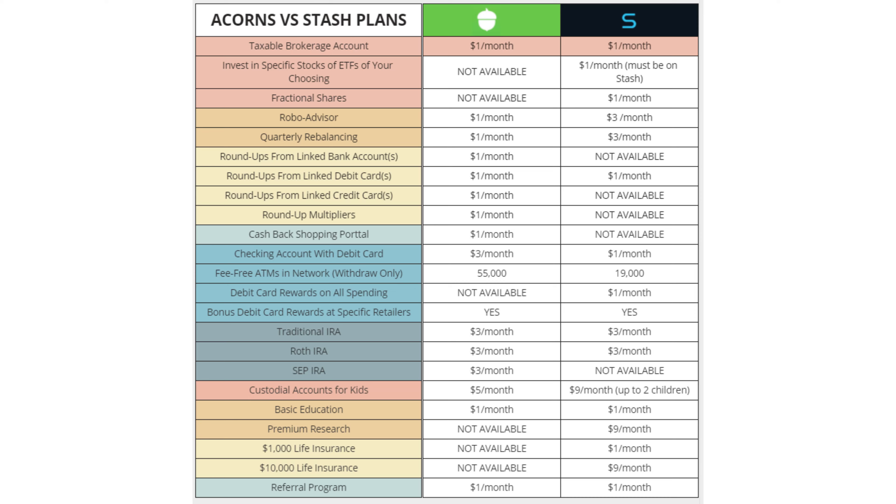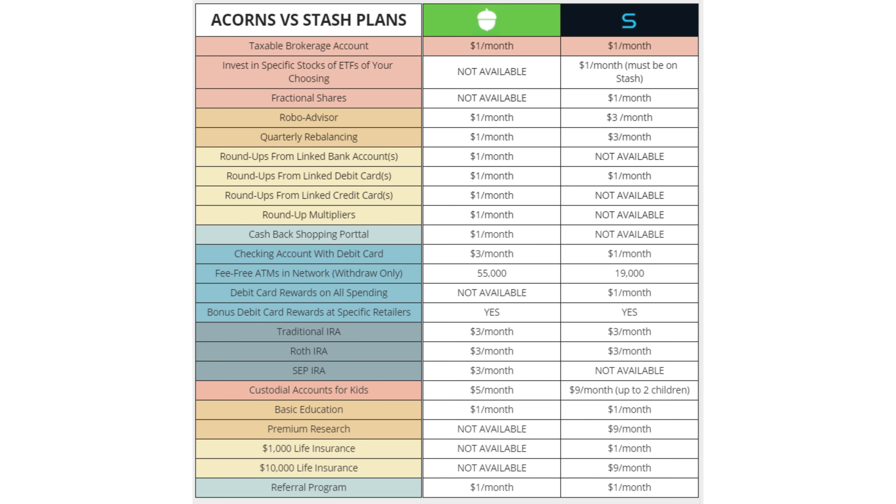Let's start with the most basic feature: the taxable brokerage account. They both have this. A taxable brokerage account is just a fancy word for a normal investment account — it's taxable because, unlike an IRA, it doesn't give you any tax advantages. Dividends are taxed, and when you sell stocks you're taxed on the gain. A taxable brokerage account is offered in both the $1 a month plan for Stash and Acorns, but there's a big difference.